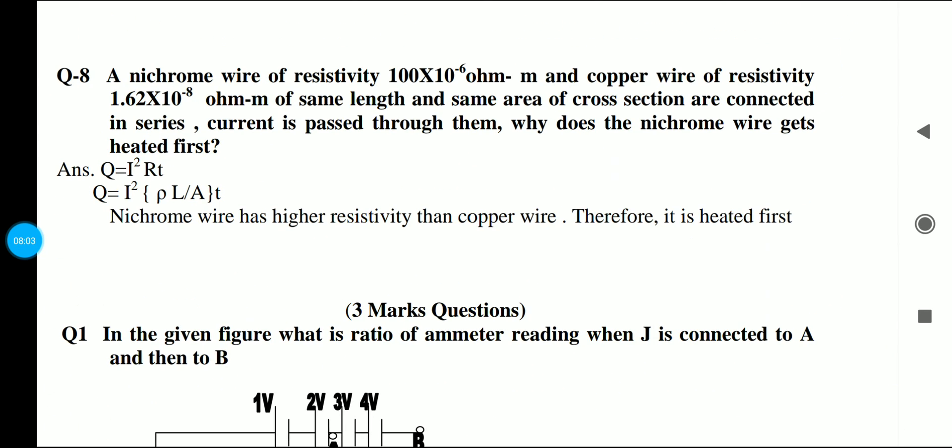After that, the last two marks question. We have the nichrome wire and copper wire of resistivity given. Same length and same area of cross section are connected in series. Current is passed through them. Why does the nichrome wire get heated first? We have told that heat is I squared RT. Our heating is directly proportional to R. If the resistivity is more, then it is heated first. The resistivity of nichrome is more than copper, that's why it is heated first.